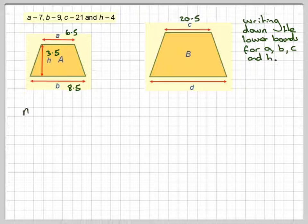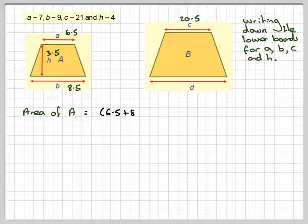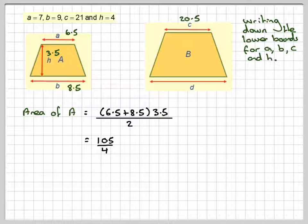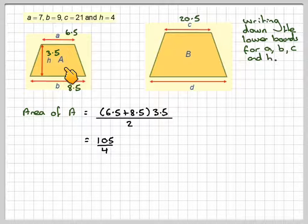First of all, we need to find the area of the trapezium. You add together the parallel sides, so it's 6.5 plus 8.5, times 3.5 divided by 2, and that will give you 105 over 4.